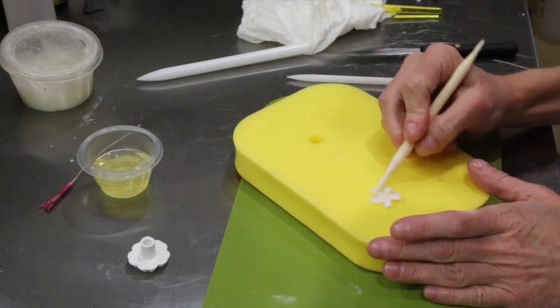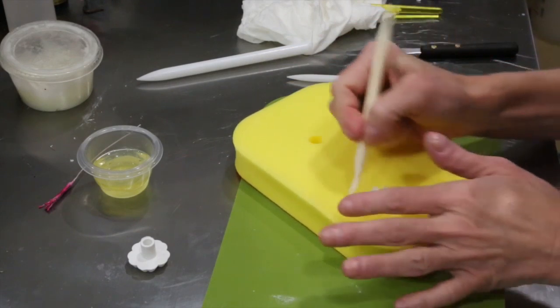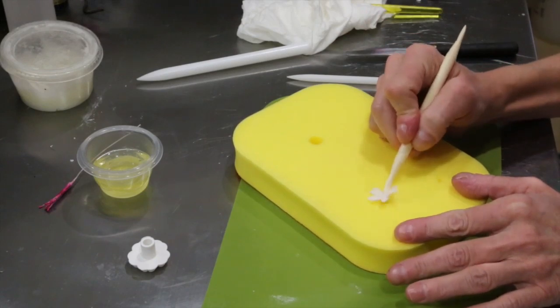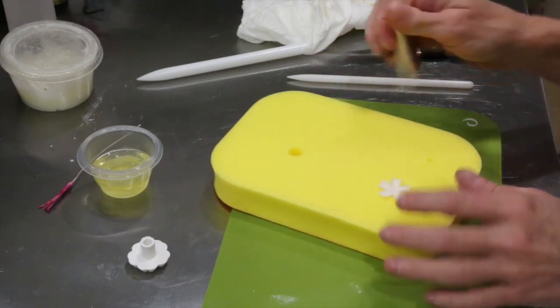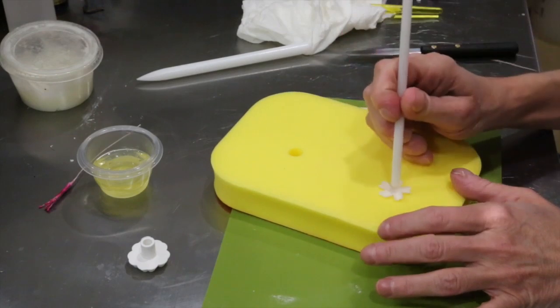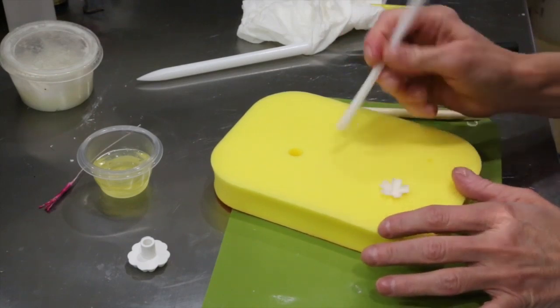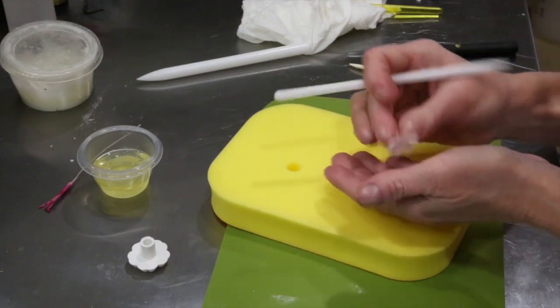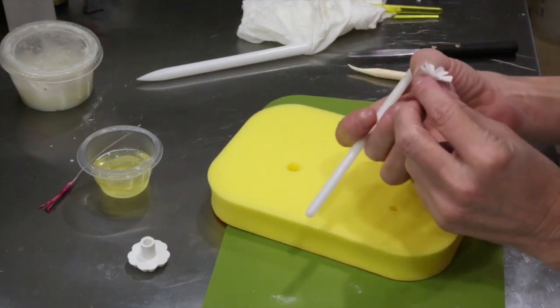And because the blossom has almost like two petals per, is what I like to say, you want to make sure to get both sides. So once you're happy with what you achieve, just give it a little bit more of a push. Gently pop it out onto your hand. It should come up pretty easily.